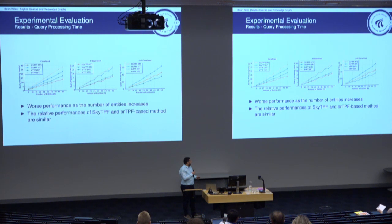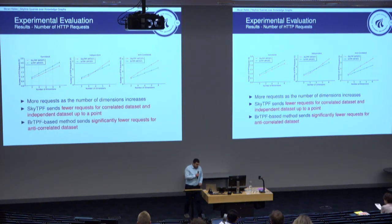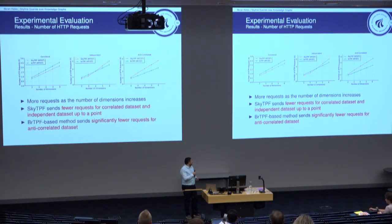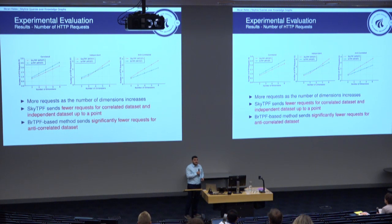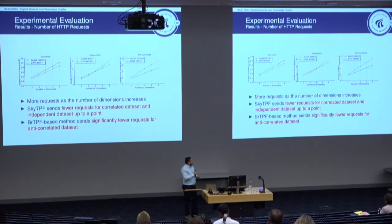Looking at query processing time with respect to number of entities, the relative performances of SkyTPF and BRTPF-based methods are quite similar. For HTTP requests, there are more requests as the number of dimensions increases, but we have fewer requests for SkyTPF for the correlated and independent datasets, and fewer requests for the BRTPF-based method for the anti-correlated dataset. This is because when SkyTPF tries to find a good pivot, it spends extra time whose reward is not visible in the anti-correlated dataset since we cannot prune effectively.